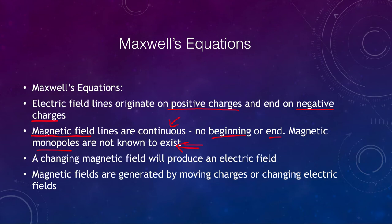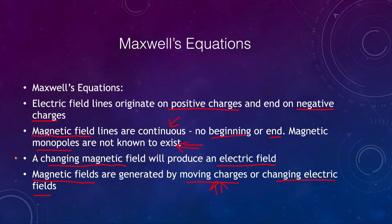When we looked at magnets, we talked about how even if you cut a magnet it will always still have both a north and a south pole. Third, a changing magnetic field produces an electric field, and the converse is also true — a changing electric field will produce a magnetic field. Finally, magnetic fields can be generated by moving charges or changing electric fields, so moving charges are another way we can generate magnetic fields.